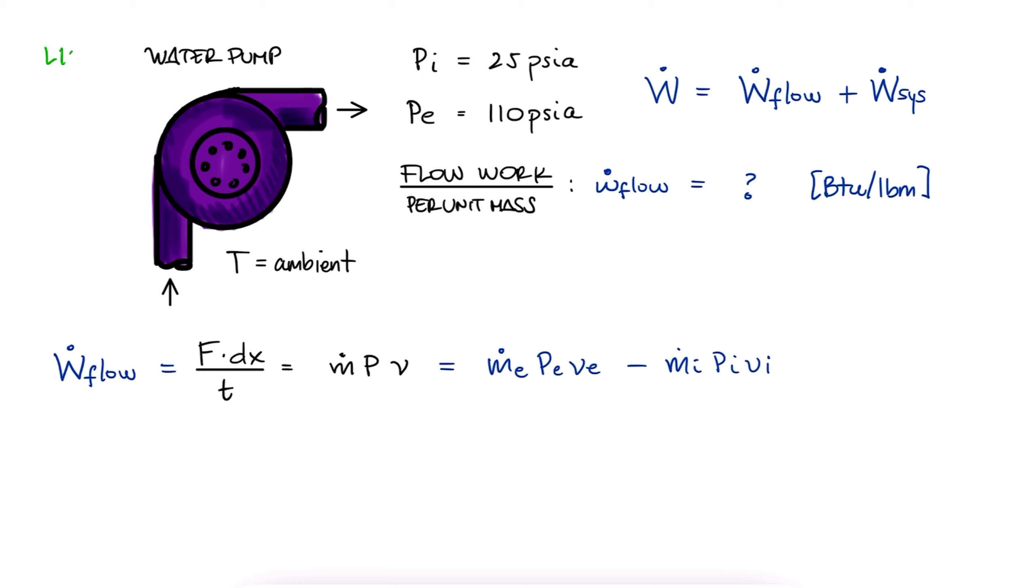Since in this case we have liquid water, liquid is what a pump works with, we can assume it to have the same specific volume at the inlet and at the exit. And from mass conservation, the mass flow in is the same as mass flow out.